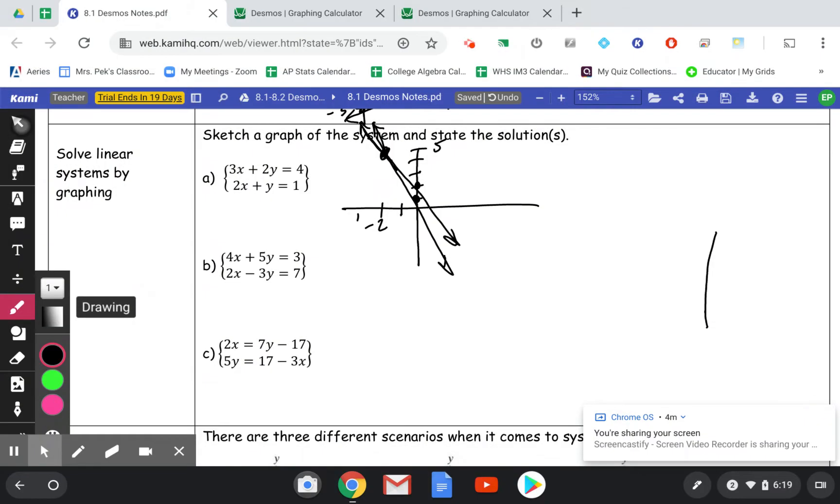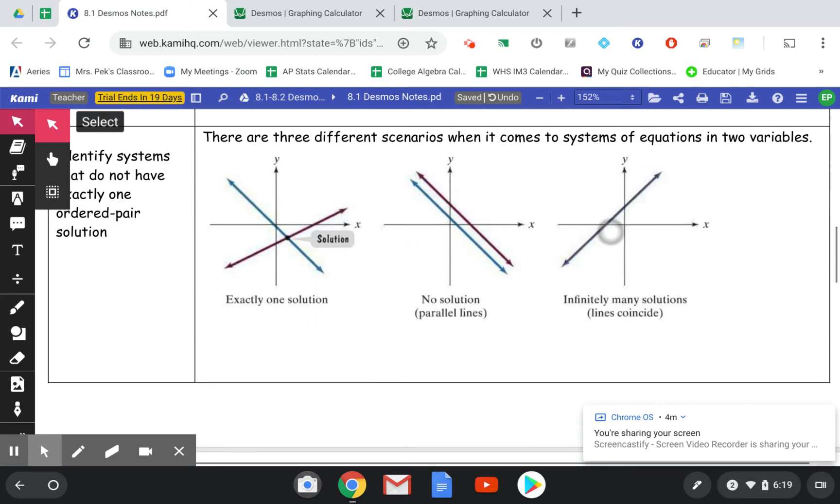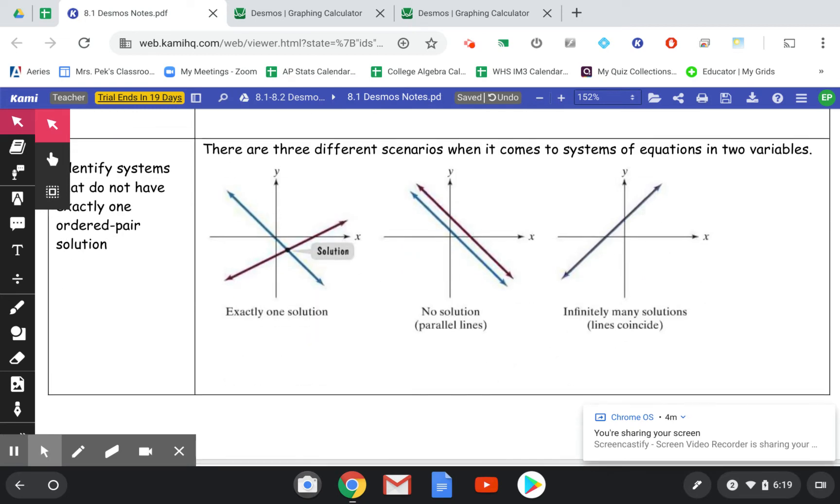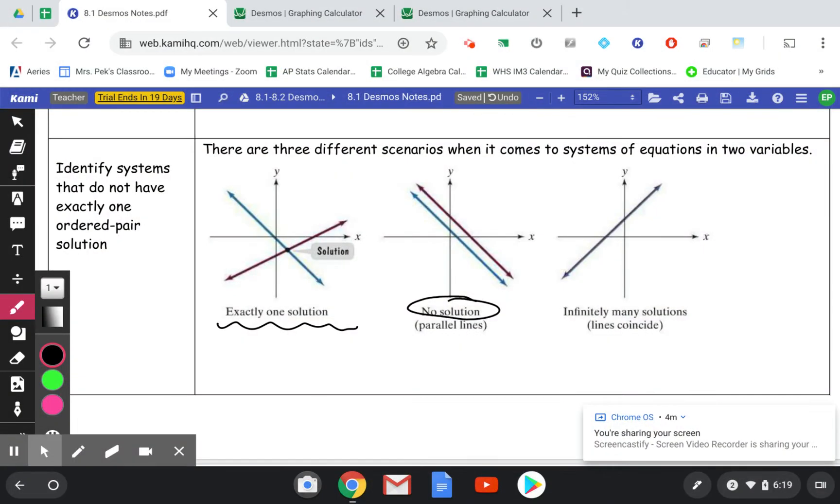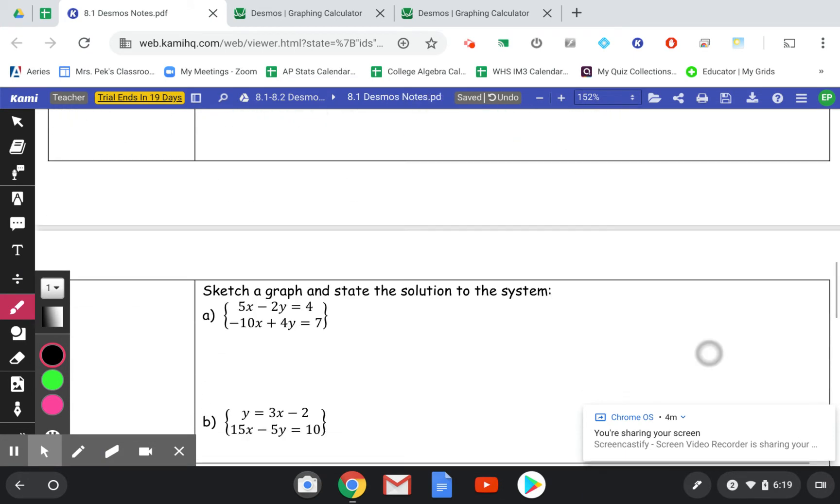So now we're going to go to the next piece here. And this is just to explain. We've seen a couple examples now where two lines cross in one point. That's going to be this situation here where we have exactly one solution. We could also have parallel lines, which means I would have no solution, or we can have two lines that end up exactly the same, which means I have infinitely many solutions. So we have a few different situations here.